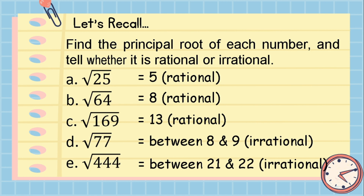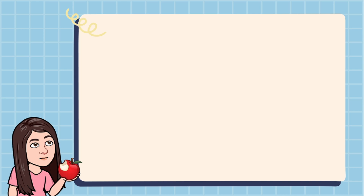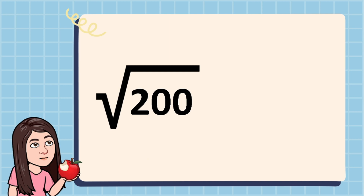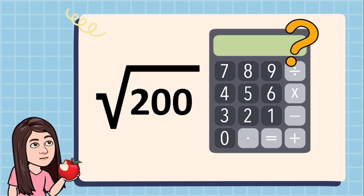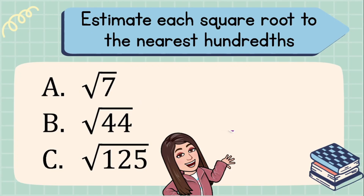I hope you got all the answers right. From that activity, you were able to name two consecutive integers where the square root of an irrational number lies. But how about if you were tasked to find the estimated value of given square roots that are not perfect squares without using a calculator? That is where our lesson for today comes in. Let's have some examples: estimate each square root to the nearest hundredths. Letter A: square root of 7. Letter B: square root of 44. Letter C: square root of 125.